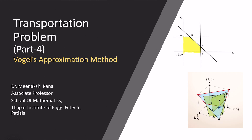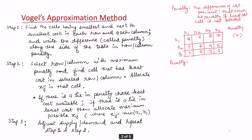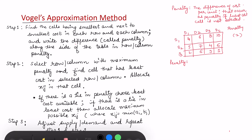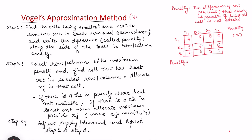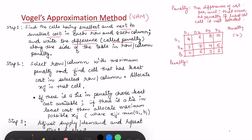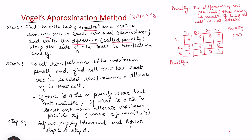In this video I'll be discussing Vogel's Approximation Method (VAM), which is used for finding the initial basic feasible solution (BFS) to a transportation problem. In VAM, we find the cell having the smallest and next-to-smallest cost in each row and each column, then write their difference. This difference is called the penalty, which is why it is also sometimes called the penalty method.